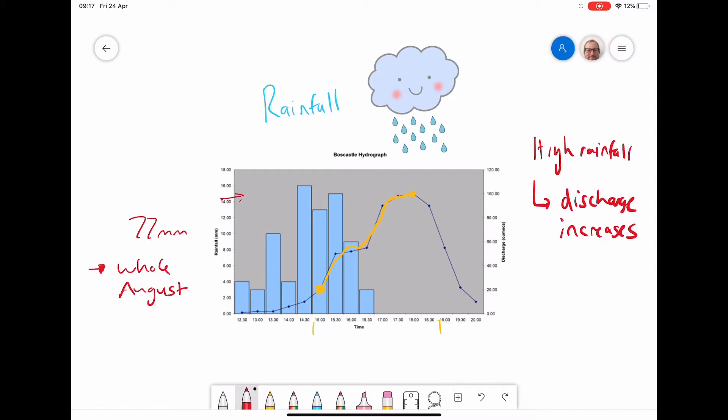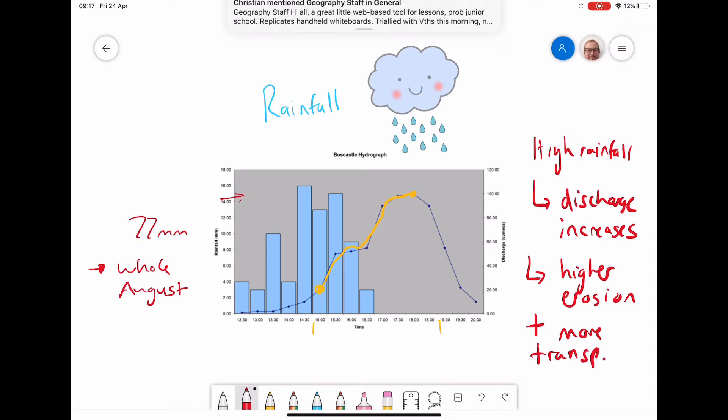If we get that kind of discharge, we get higher erosion and more transportation. The main reason is simply because we get more energy in the river. The river has more energy and therefore those processes like abrasion and hydraulic action can happen. The same with transportation. If we've got a larger amount of discharge, it has more energy to do those processes. So higher rainfall leads to higher discharge, which leads to higher energy, which leads to higher erosion and transportation.